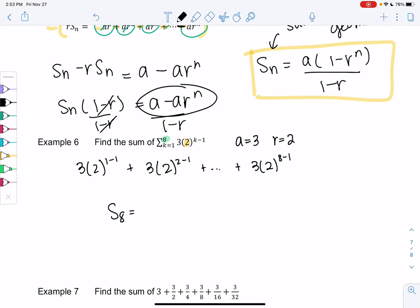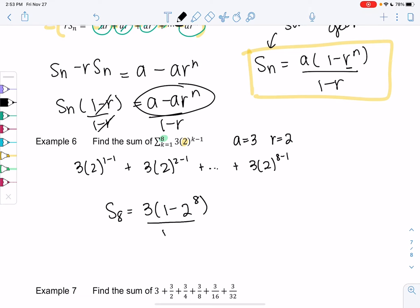The sum of the first 8 terms will be a, which is the first term, and then it'll be 1 minus r, so 2 to the 8th power all over 1 minus 2. That's how we can find the sum of the first 8 terms without actually doing it.